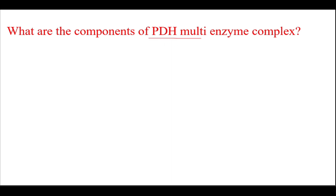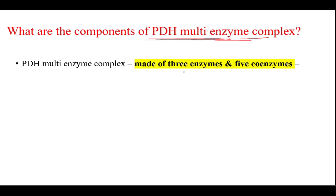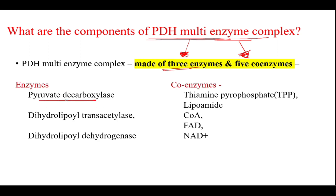The PDH multi-enzyme complex is made of 3 enzymes and 5 coenzymes. The 3 enzymes are pyruvate decarboxylase, dihydrolipoil transacetylase, and dihydrolipoil dehydrogenase. The coenzymes are thiamine pyrophosphate, lipoamide, coenzyme A, FAD, and NAD+.